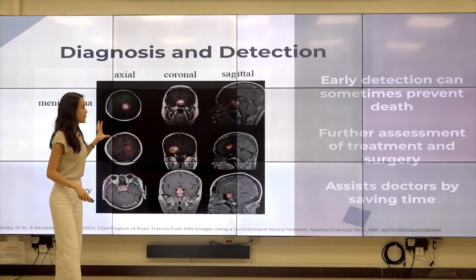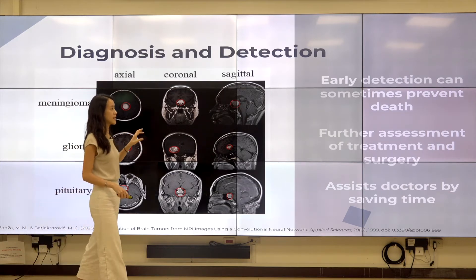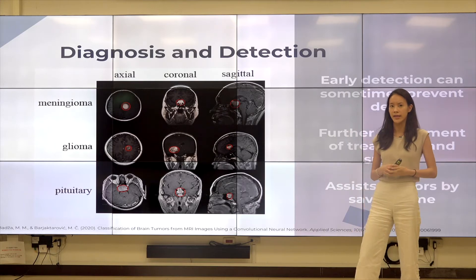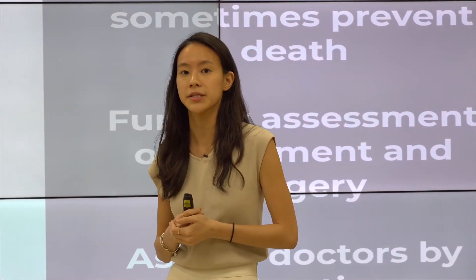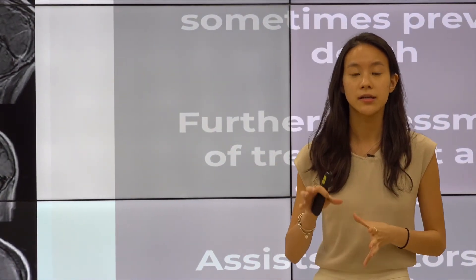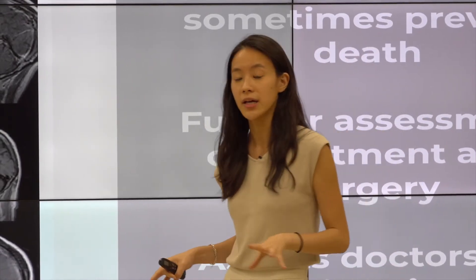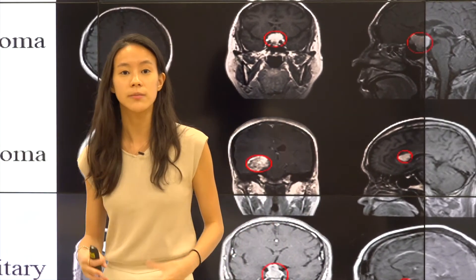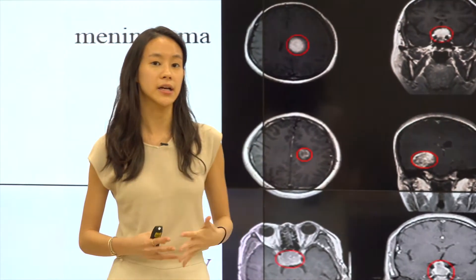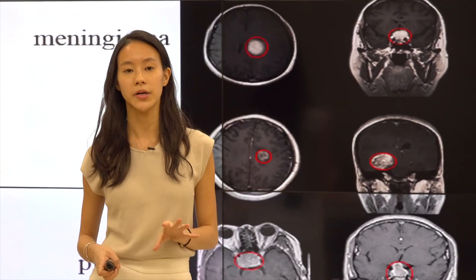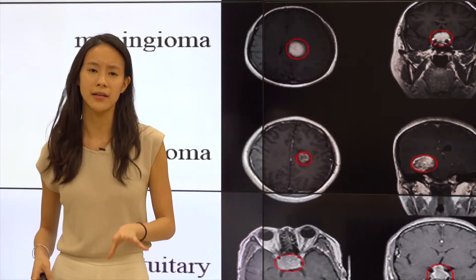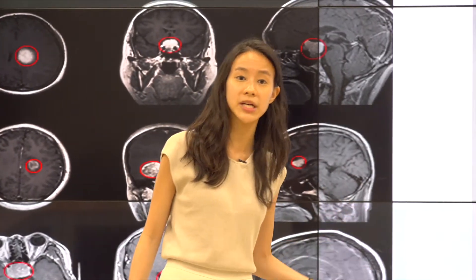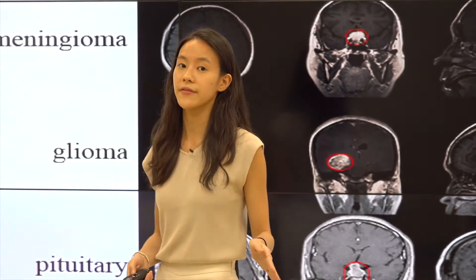The whole point of using classification in diagnosis and detection is that it can potentially identify diseases during early stages, preventing deaths. For brain tumors, early detection allows steps like surgically removing the tumor to prevent spread. Classification can also further assess what kinds of treatments or surgeries are required based on classified tumor types. Most importantly, it assists doctors by saving time on analyzing hundreds of MRI scans — potentially eight scans per patient just to diagnose a tumor.